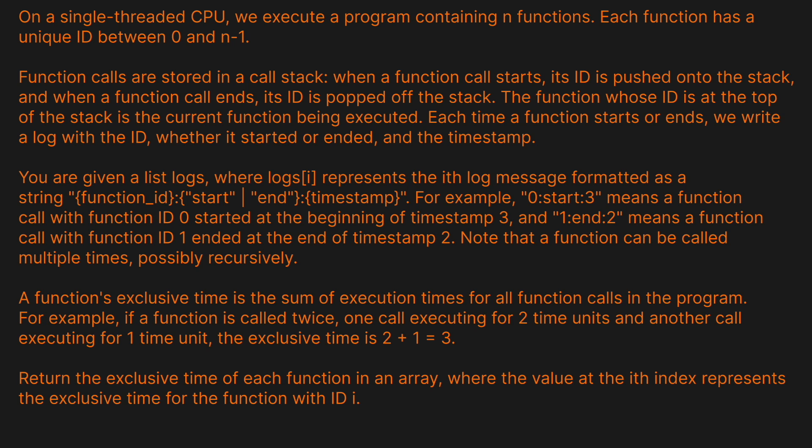You are given a list of logs where logs[i] represents the i-th log message formatted as a string: function_id:start_or_end:timestamp. For example, '0:start:3' means a function call with ID zero started at the beginning of timestamp three, and '1:end:2' means a function call with ID one ended at time two. A function's exclusive time is the sum of all execution times for function calls in the program. Return the exclusive time of each function in an array.